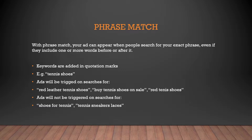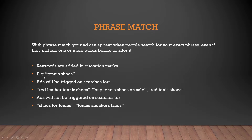The next type is phrase match, and the way you add it is to put your keyword in double quotes. This gets you one step closer in terms of narrowing your keyword strategy, because you're making sure that your ad will appear only when people search for your exact phrase. So if you add 'tennis shoes' in double quotes, your ads will be triggered on 'red leather tennis shoes,' 'buy tennis shoes on sale,' or 'red tennis shoes.'